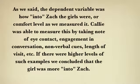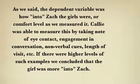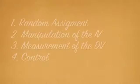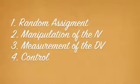Callie narrates: she measured the dependent variable by observing Zach's behavior. The DV was how interested the girls were in Zach, measured by comfort level — specifically eye contact, engagement in conversation, non-verbal cues, and length of visit. To conclude, the video demonstrated the four features of an experiment: random assignment, manipulation of the IV, measurement of the DV, and control.